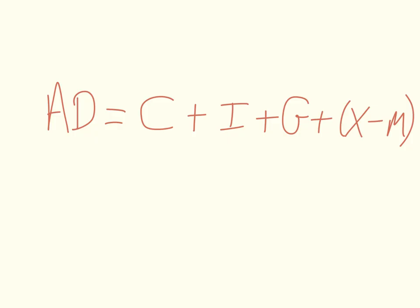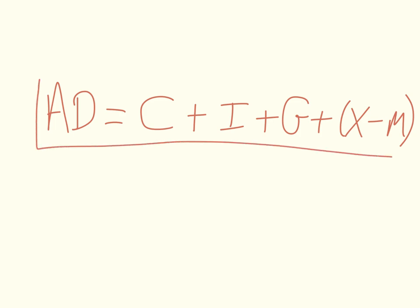This brings us to a very important equation that we will use frequently in this course: Aggregate Demand equals C plus I plus G plus (X minus M). C is consumption spending by households, I is investment spending by businesses, G is government spending by all branches and levels of government, and X minus M is net exports — the difference between exports (goods and services sold to foreigners) and imports (goods and services bought by domestic consumers from foreign producers).